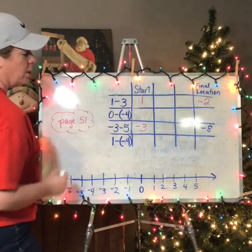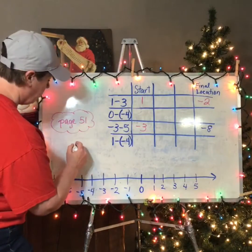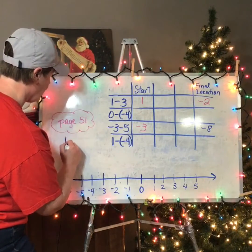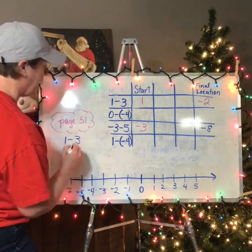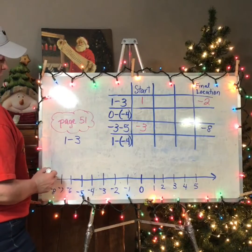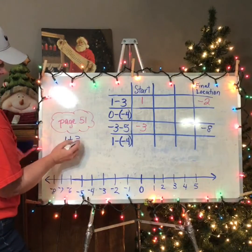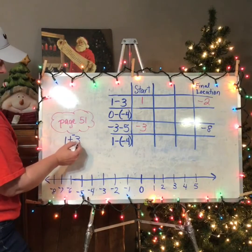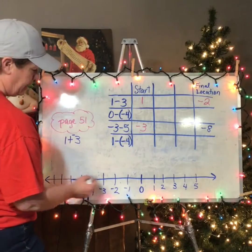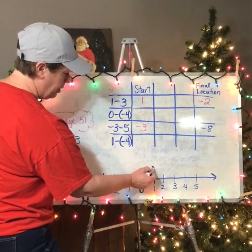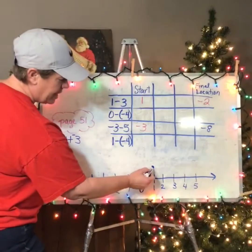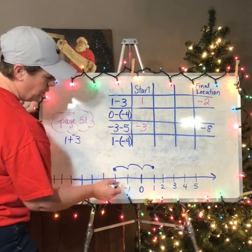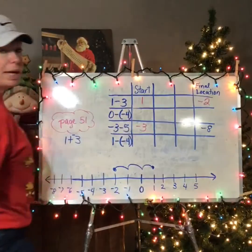So 1 minus 3, we already know is negative two. We're going to show that subtraction is the same as adding the opposite. So I started out at 1 minus 3. If I switch this to be adding and the opposite for the second number, I have 1 plus negative 3. If I start at one and I add three negatives, that pops me to the left three times: one, two, three — which is negative two, like we had before.